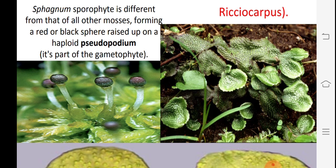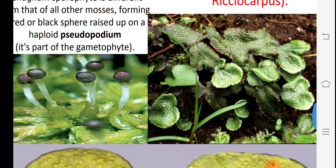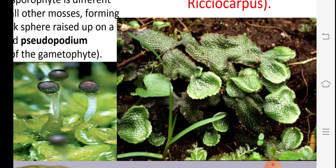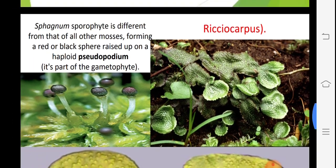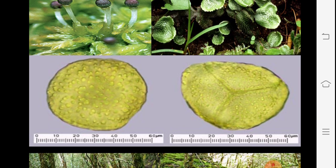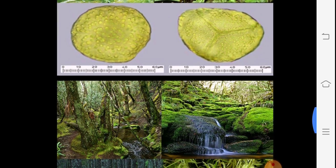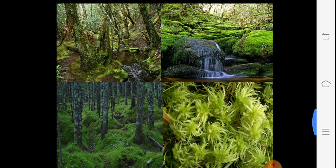Sphagnum has a stalk called the pseudopodium. The genus Riccia from Ricciaceae shows air pores observable on the thallus. Spores in some members show two views: distal and proximal. The right-hand spore shows a tri-radiate mark on the distal side; the proximal side does not show this mark. This is also a specific developmental character. There are different habitats — the lower photograph shows Sphagnum moss localities in the forest.